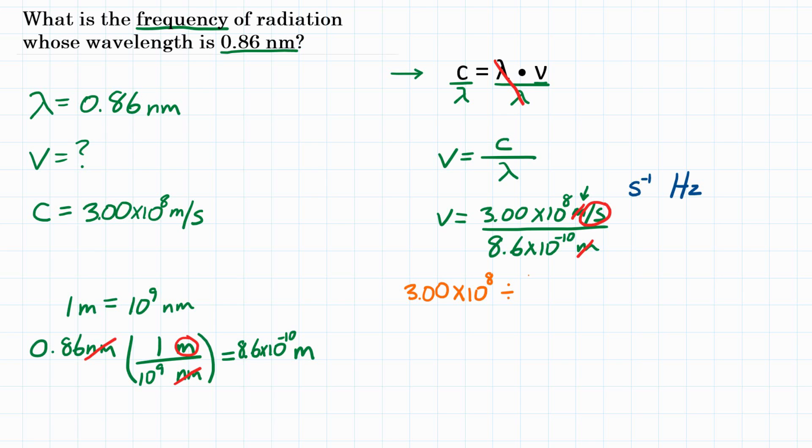So we're going to open parentheses and then put 8.6 times 10 to the negative 10th. And then close parentheses, hit equals, and you should have 3.488 times 10 to the 17th.